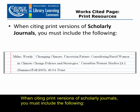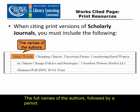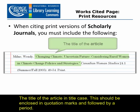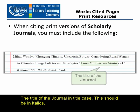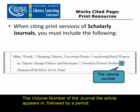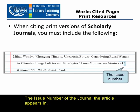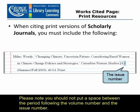When citing print versions of scholarly journals, you must include the following: the full names of the authors, followed by a period. The title of the article in title case — this should be enclosed in quotation marks and followed by a period. The title of the journal in title case — this should be in italics. The volume number of the journal the article appears in, followed by a period. The issue number of the journal the article appears in. Please note, you should not put a space between the period following the volume number and the issue number.